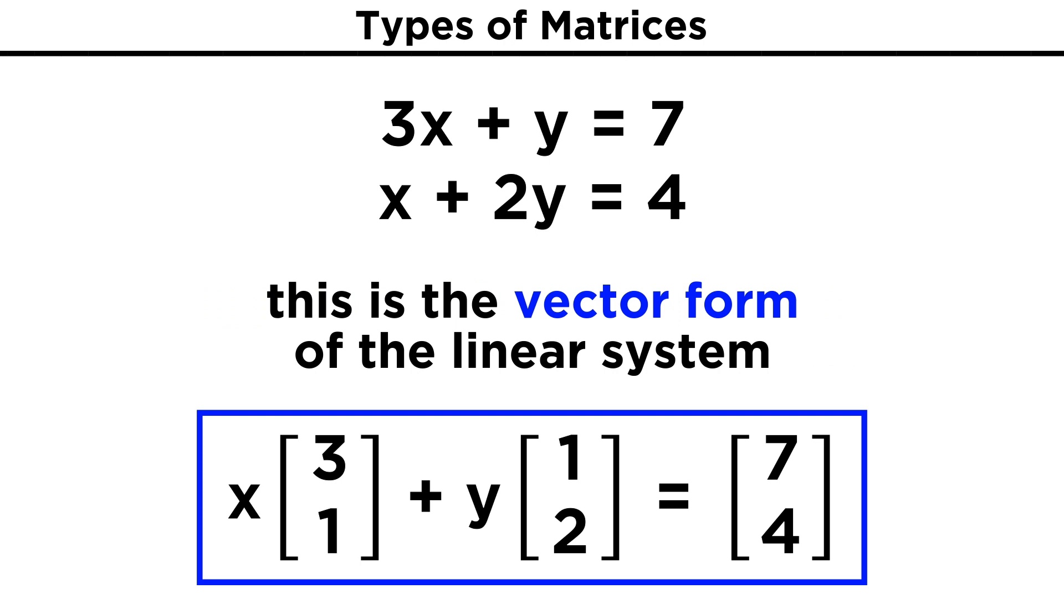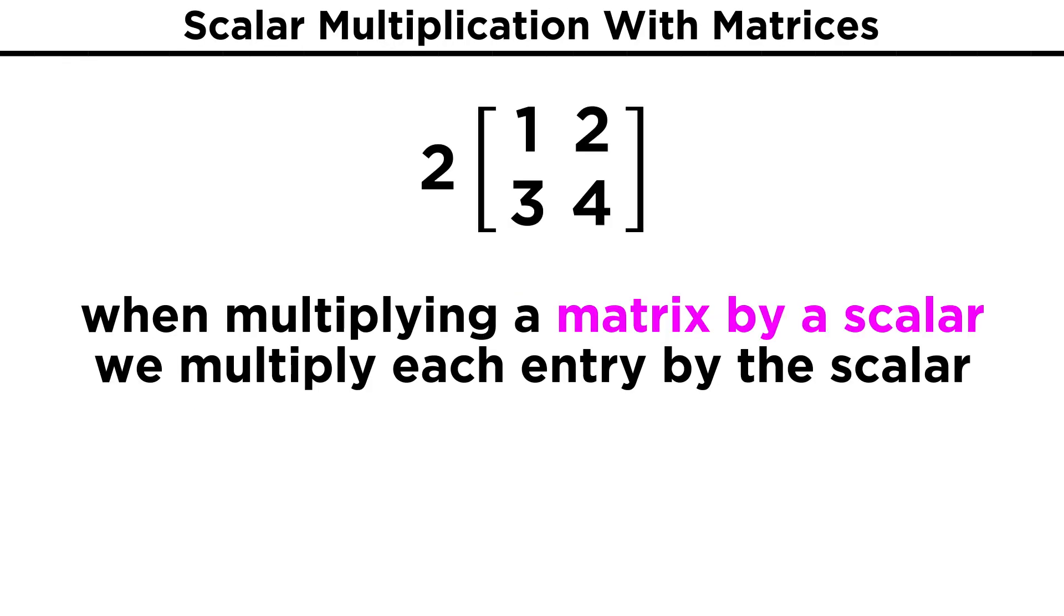This also outlines some basic operations we can perform with matrices. Given that we pulled a scalar out of two matrices to do this, we can also do the reverse, and perform scalar multiplication. This is very simple. If we have a scalar times a matrix, we just multiply every entry in that matrix by the scalar. So if we have two times this matrix, we just double all the entries, which will work the same way regardless of the dimensions of the matrix.